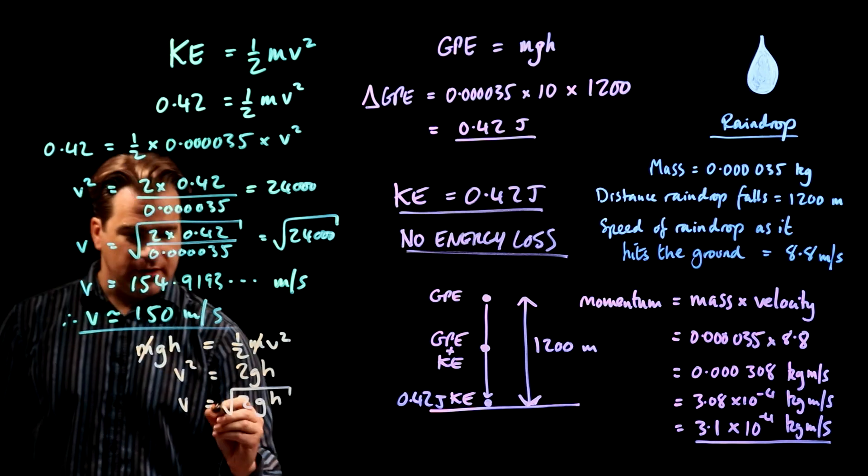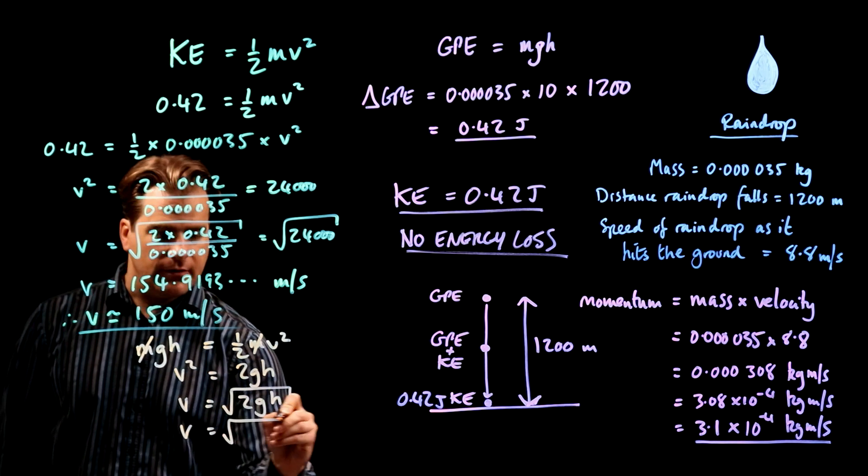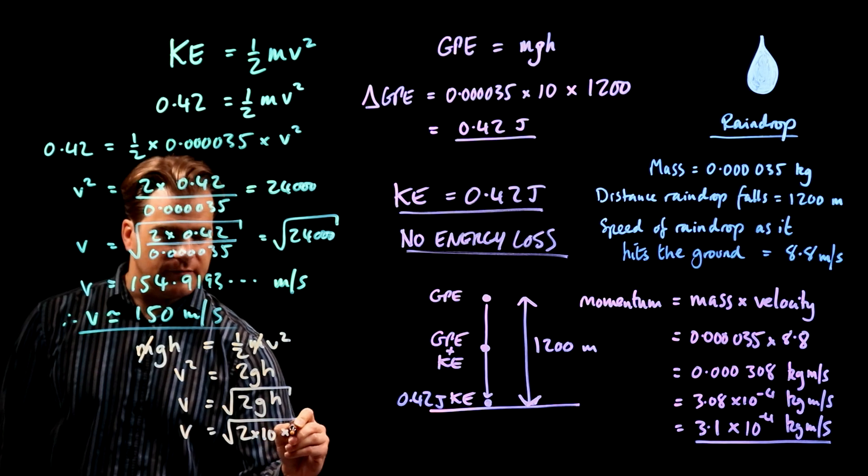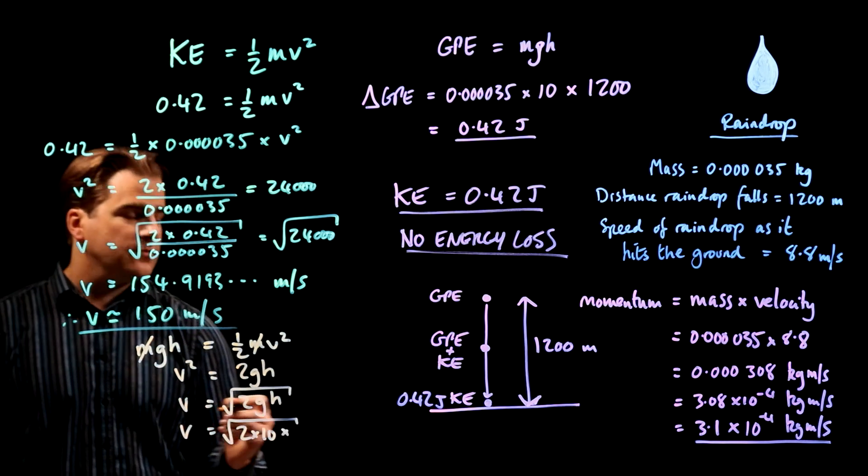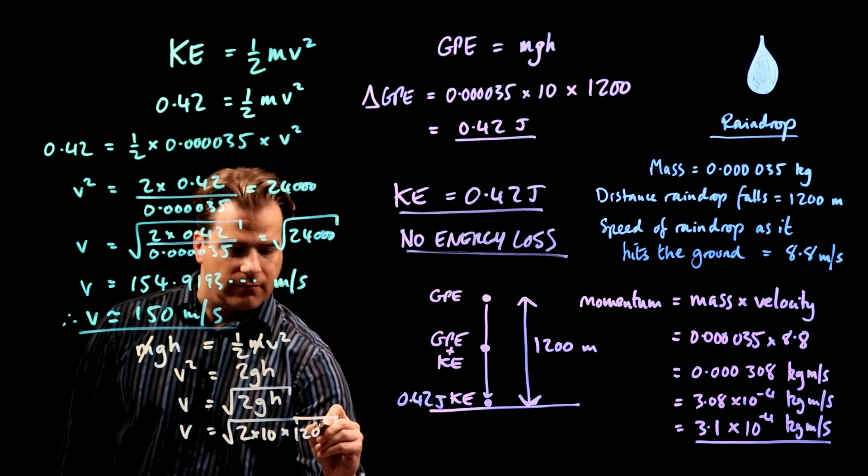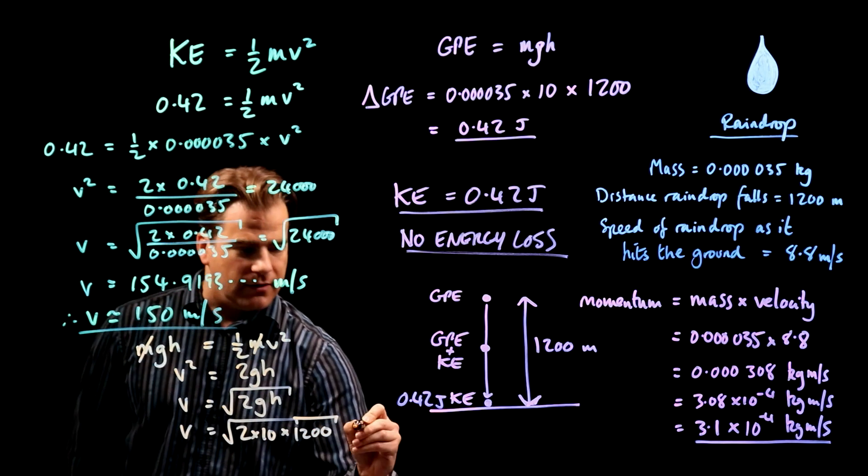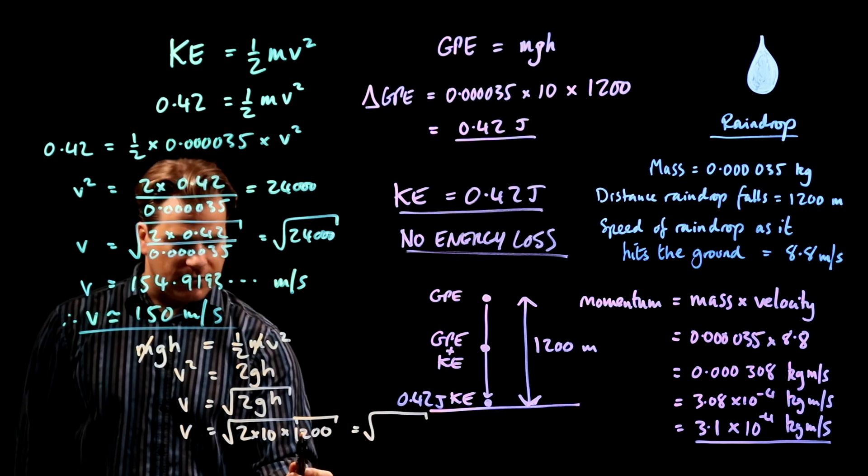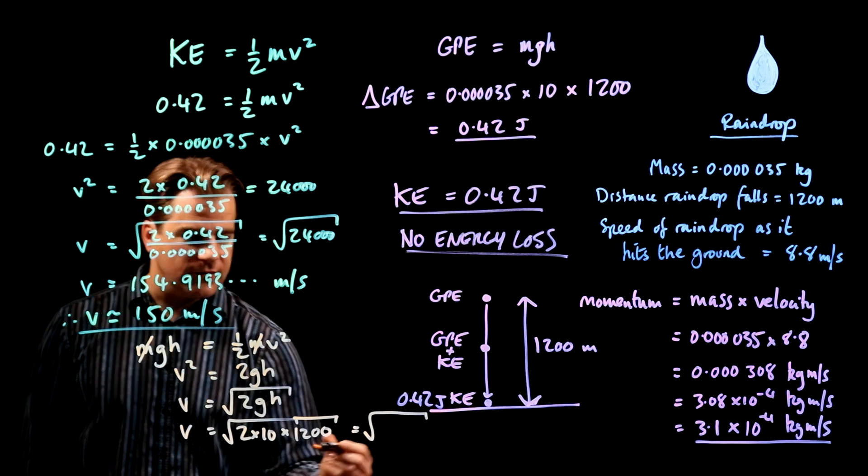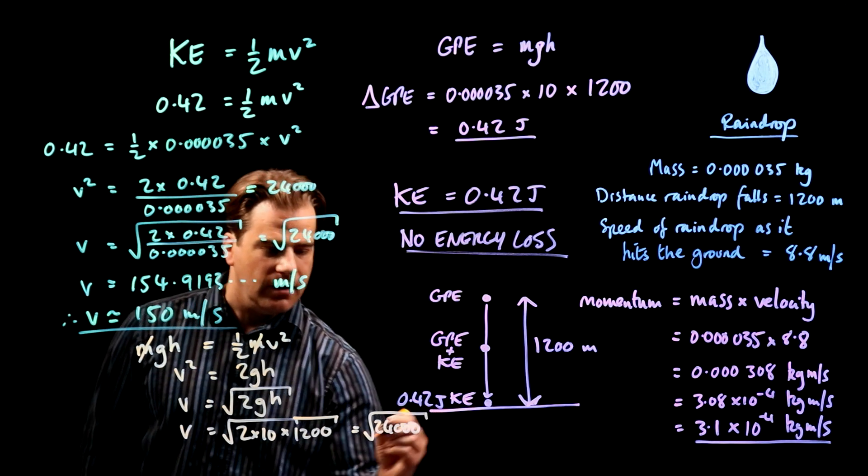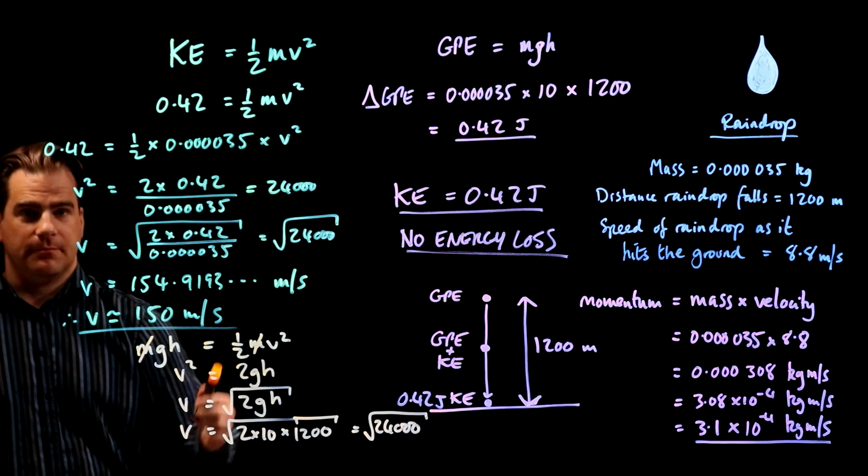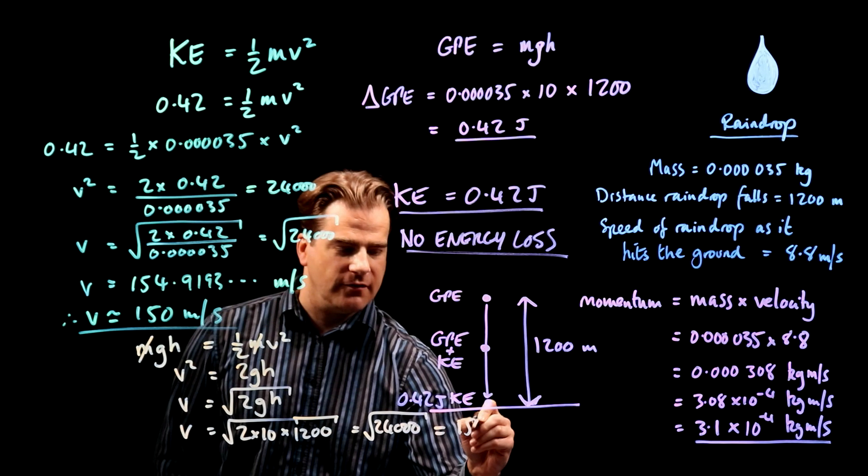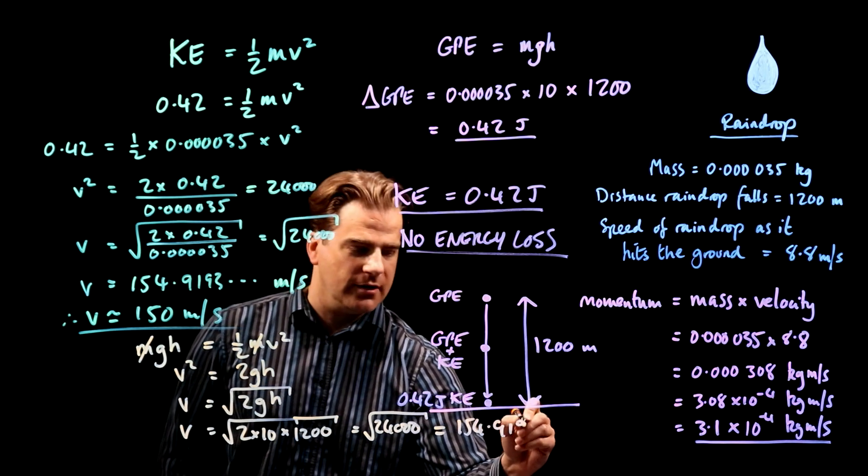Let's put the numbers in. And that's the square root of 2 times G is 10 times the height is 1200. Okay? And that is the square root of 10 times 1200 is 12,000 times 2 is 24,000. Oh, look, it's the same, okay? Which is, so that, of course, is the same. It's 154.9193 whatever.